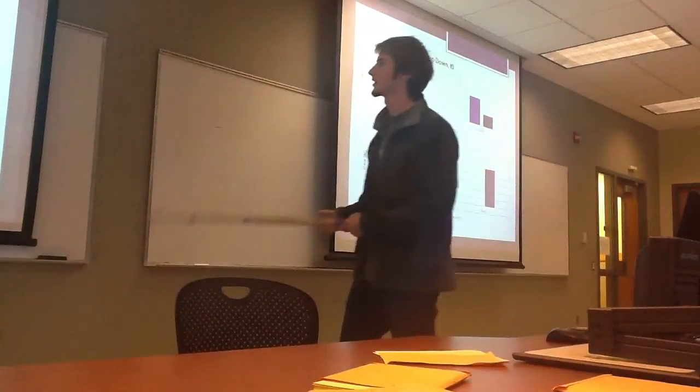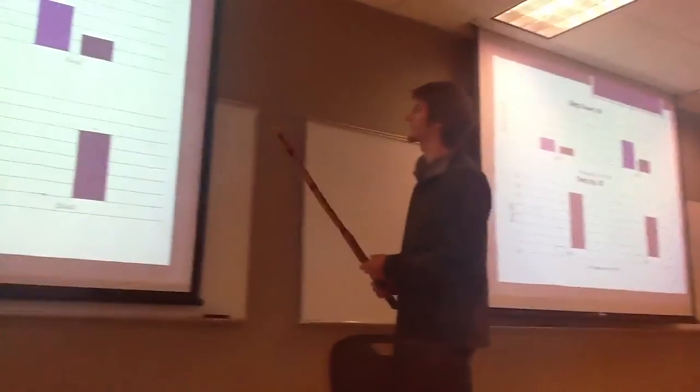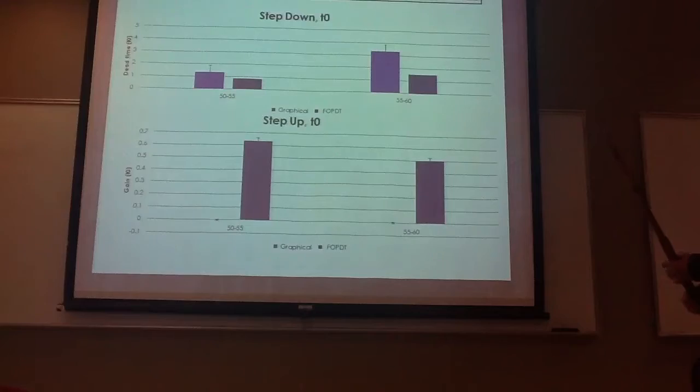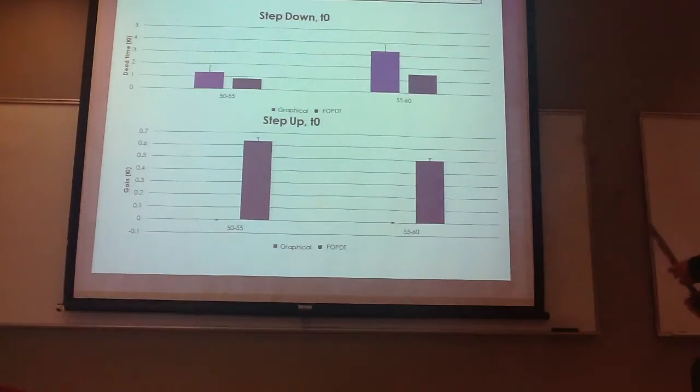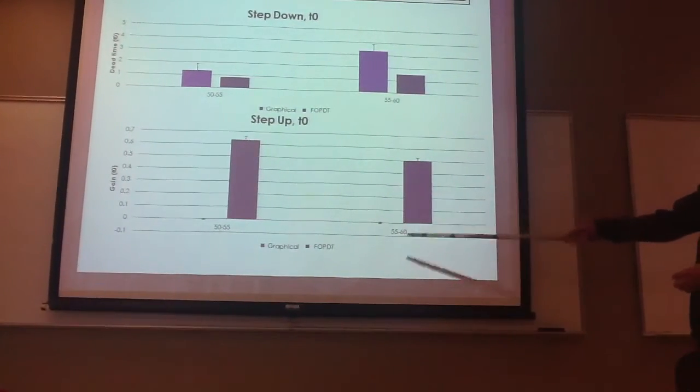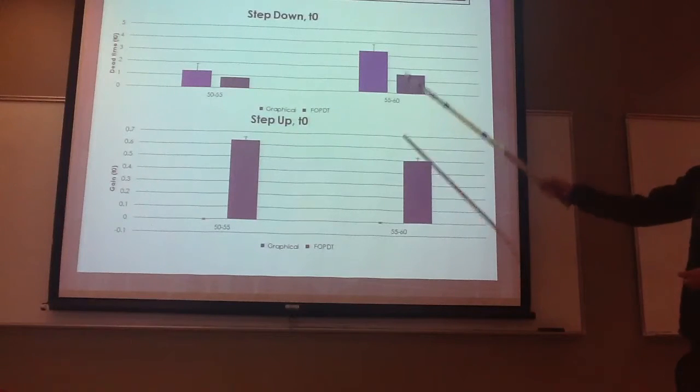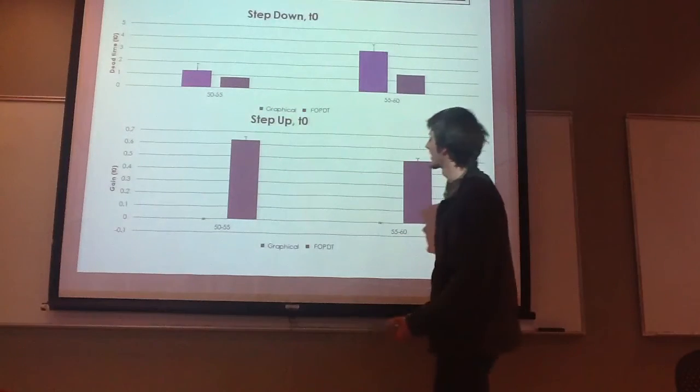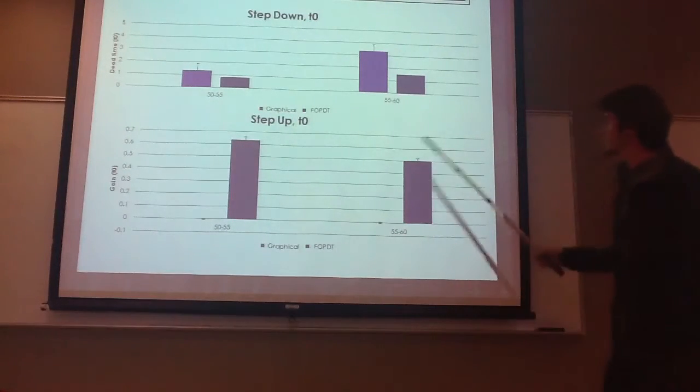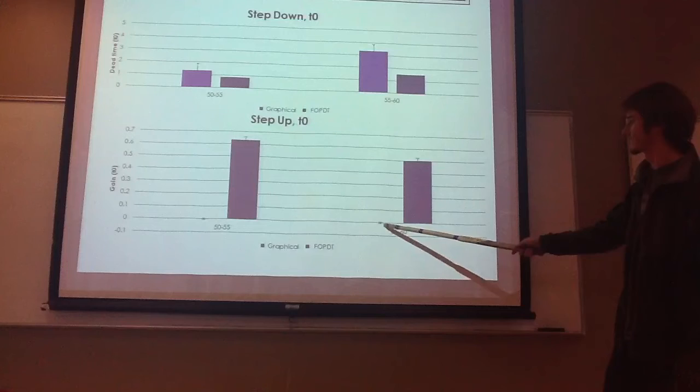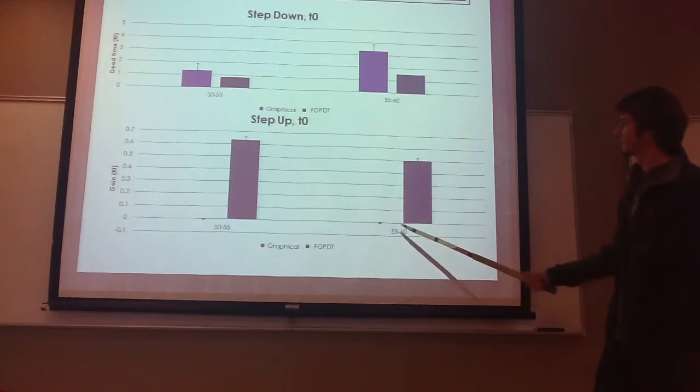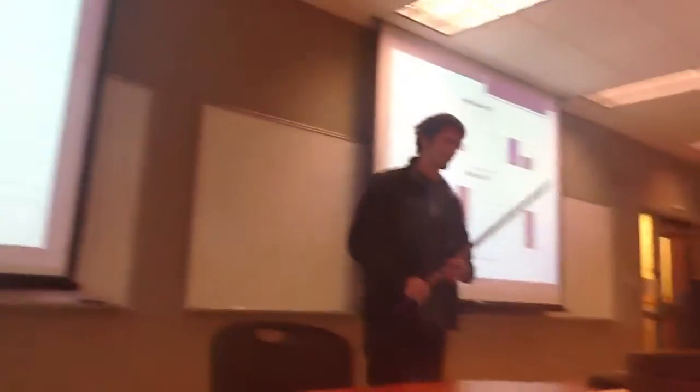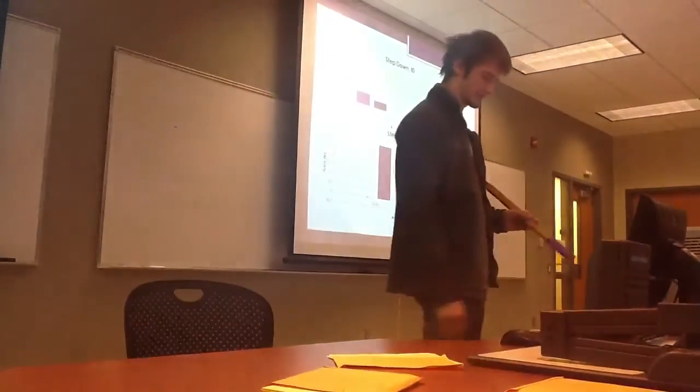And for the dead time, we didn't have very much dead time, except for in the 55 to 60 range for the graphical method. 50 to 55 is the only range where we got to match pretty close together, but there was literally zero for the graphical method when we did the step ups. We couldn't match it, it was exactly matched, which is weird.